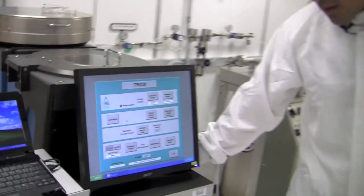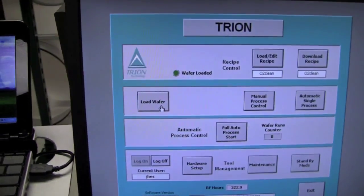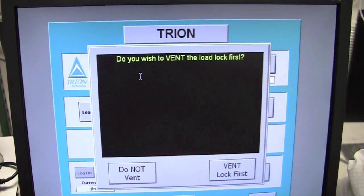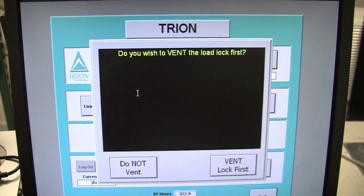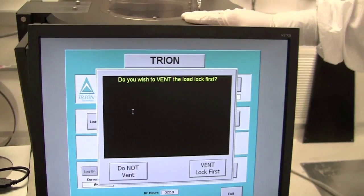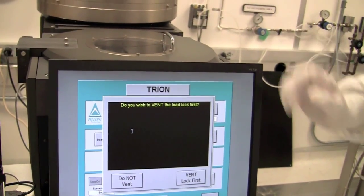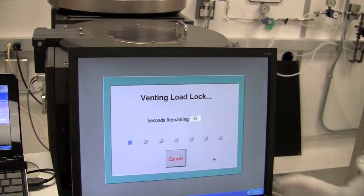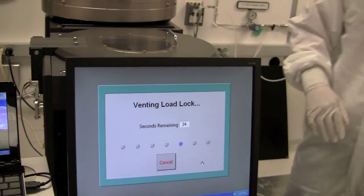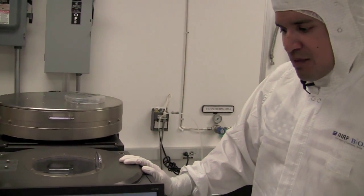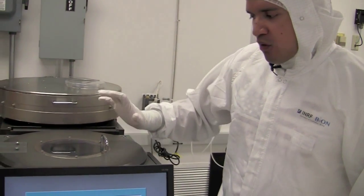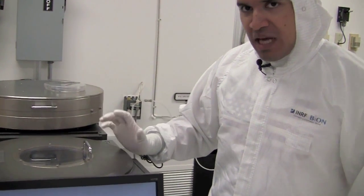So, once we know that there's no sample already loaded, we can load our sample. So, to do that, we click load wafer on the screen. It will ask you, do you wish to vent the load lock? So, by vent, it means it's going to put nitrogen in here to allow you to open the vent. So, yes, you want to vent it. You're going to hear some noises. It takes about half a minute and then this will slowly come up to atmospheric pressure.